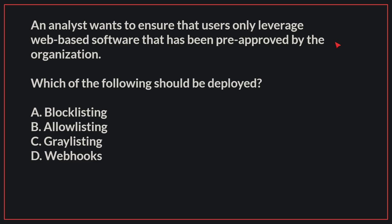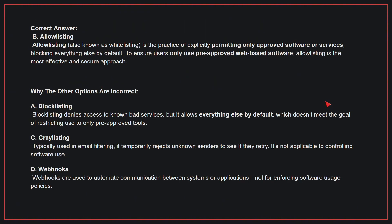An analyst wants to ensure that users only leverage web-based software that has been pre-approved by the organization. The correct answer is B. Allow listing. Allow listing is the practice of explicitly permitting only approved software or services, blocking everything else by default. To ensure users only use pre-approved web-based software, allow listing is the most effective and secure approach.